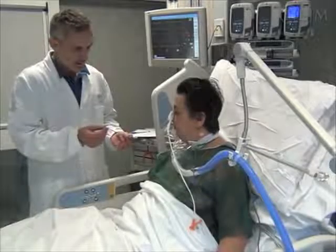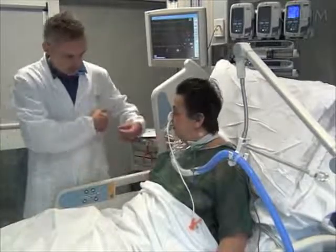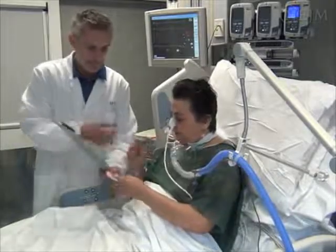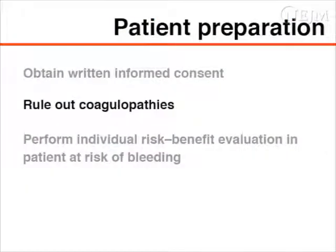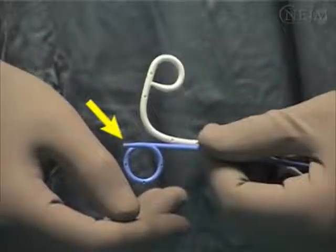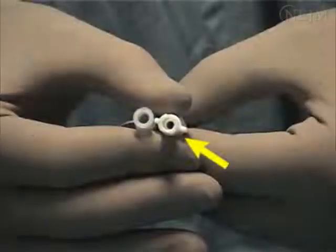When appropriate, before starting, explain the procedure to the patient and obtain written informed consent. Coagulopathies should be thoroughly ruled out and, if possible, corrected before the procedure. Whether to carry out the procedure in a patient at risk of bleeding should be based on an individual risk-benefit evaluation. The use of a small-bore catheter is safer in all patients with coagulation abnormalities.